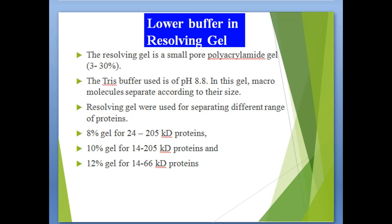The resolving gel is a small-pore polyacrylamide gel. The Tris buffer used is at pH 8.8. In this gel, macromolecules separate according to their size. Resolving gels are used for separating different ranges of proteins.